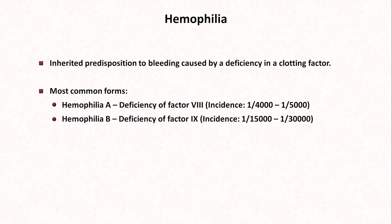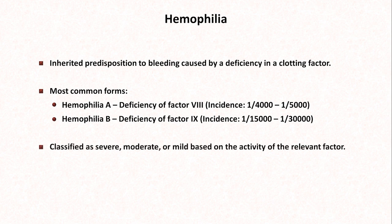There is also a form of hemophilia caused by an inherited deficiency of factor XI that is sometimes referred to as hemophilia C. This is much, much more rare than the other two, and the same information generally applies. Hemophilia is classified as severe, moderate, or mild, based on the activity of the relevant factor. About one-half of patients are classified as severe.